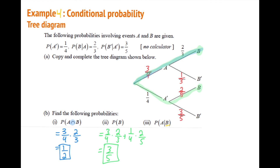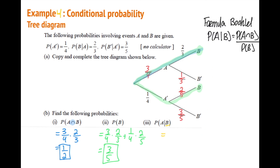Part c: find the probability of A given B. Since B is the second event, we use the conditional probability formula: P(A|B) = P(A and B) / P(B). We know P(A and B) = 1/2 from part a, and P(B) = 3/5 from part b. Dividing gives P(A|B) = 5/6.